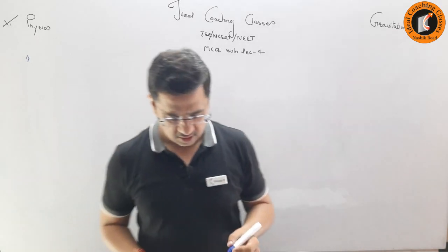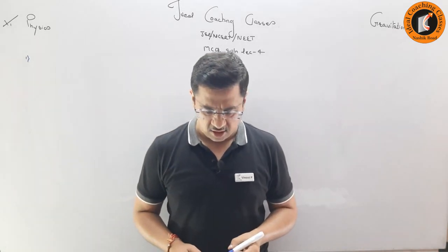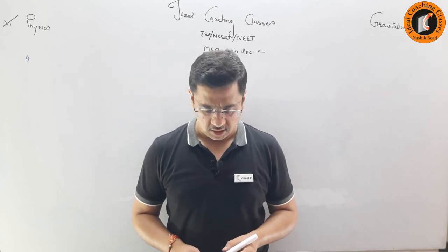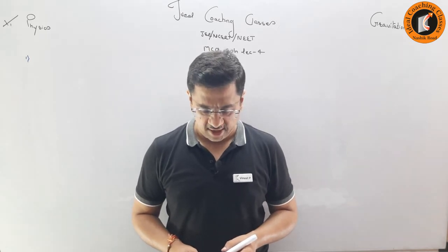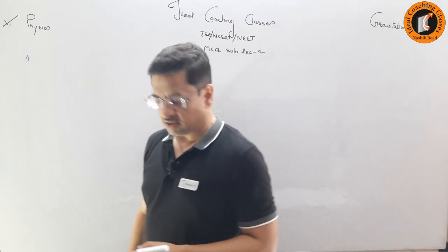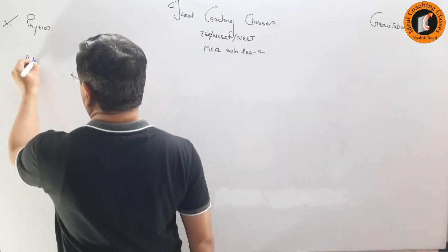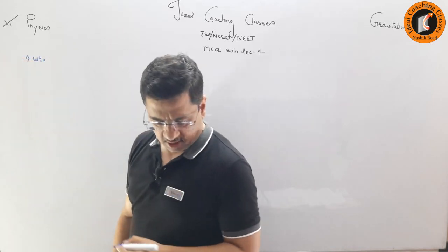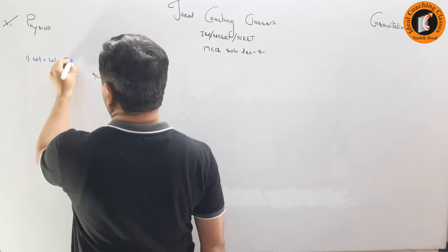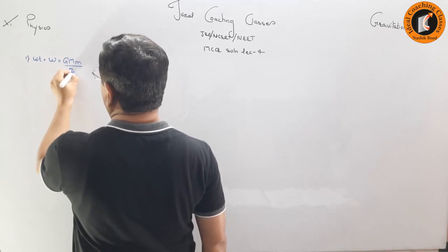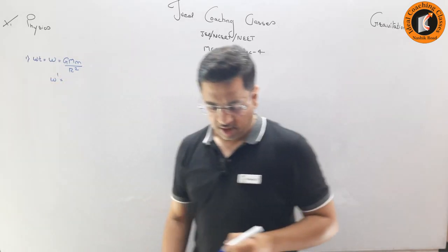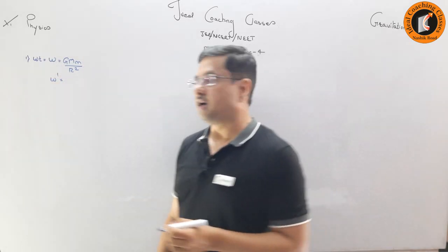The question is: W is the weight of a man on the surface of the earth. What would be his weight if he goes to a height h equal to the radius of the earth? His weight W on the surface of the earth is due to gravitational attraction, and we need to find W dash at a height equal to the radius of the earth.